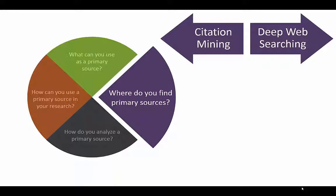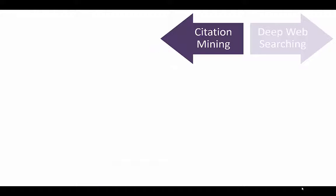If you start your research by finding background information from secondary sources, you can use citation mining to compile a list of primary sources that others have used.